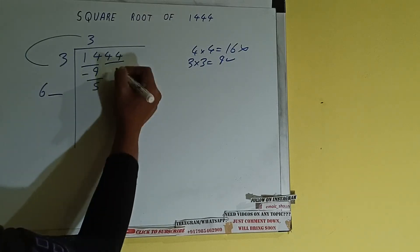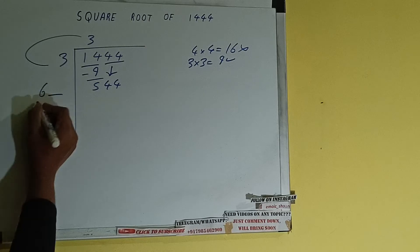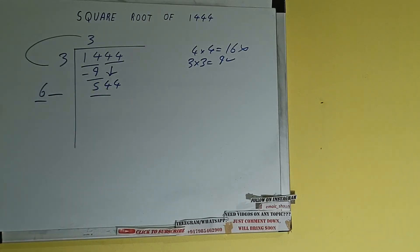So bring the next pair down and it will be 544. Now whatever number we write here, we have to write here also. So we can compare this 6 and 54. So 6 times 9 is 54, right?